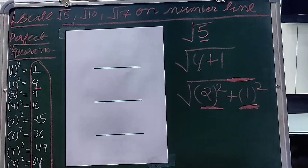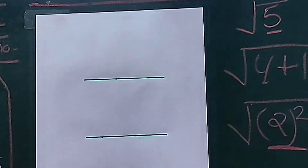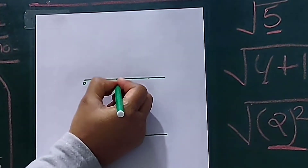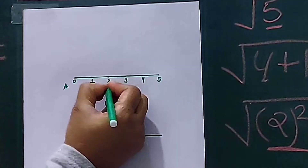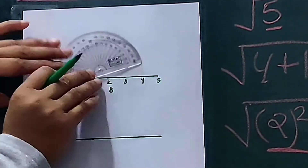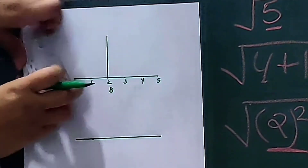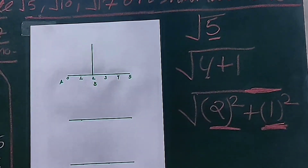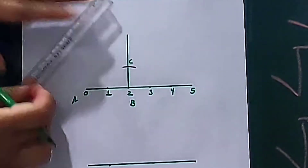First, make a line and mark some points at equal distance. I am taking 2 centimeters equal to 1 unit, and mark 0, 1, 2, 3, 4, 5. For root 5, we have two numbers: 2 and 1. So we will take AB equal to 2 units. Now make a perpendicular on point B. As our next number is 1, measure 1 unit from here and make a cut on this line at point C. Mark this point as C. Now join A to C.